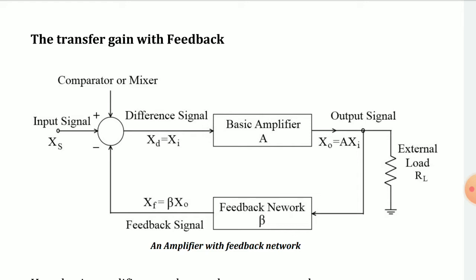On the output side we have the load RL. The output signal goes to the output sampling network. The feedback signal joins at the comparator or mixer on the input side, and the connection could be series or shunt based on the topology.